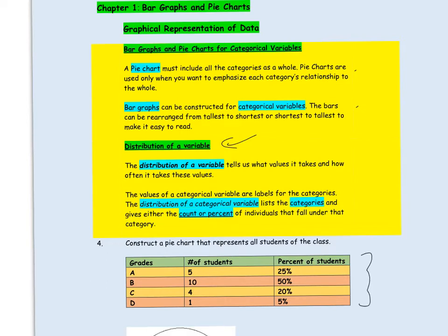Here is an example of a distribution. The variable here is grades — it's a categorical variable because it is not a numerical measurement. The various values that grades can take are A, B, C, and D. Corresponding to A you see the number five, meaning five students received an A. Corresponding to B, ten students received a B. Corresponding to C, four students received a C, and similarly one student received a D.